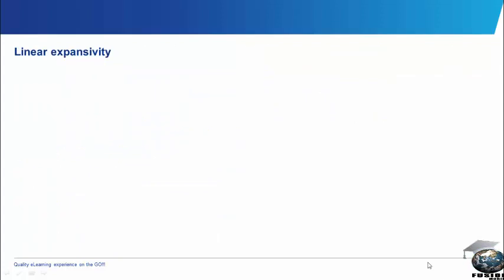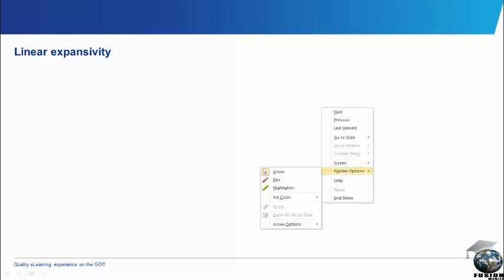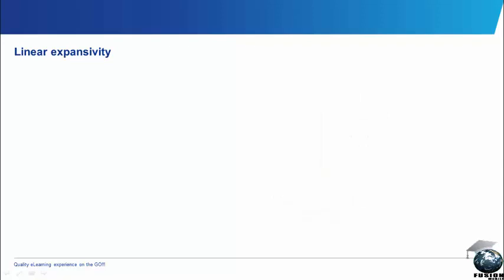We can now handle them one-by-one. Considering linear expansivity, we can define it as the expansion of a body in length per unit length per degree rise in temperature. For example, if I have a metal rule of length 10 cm,